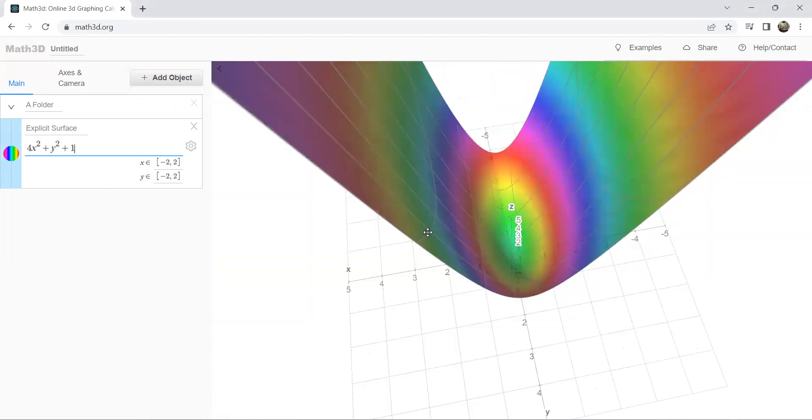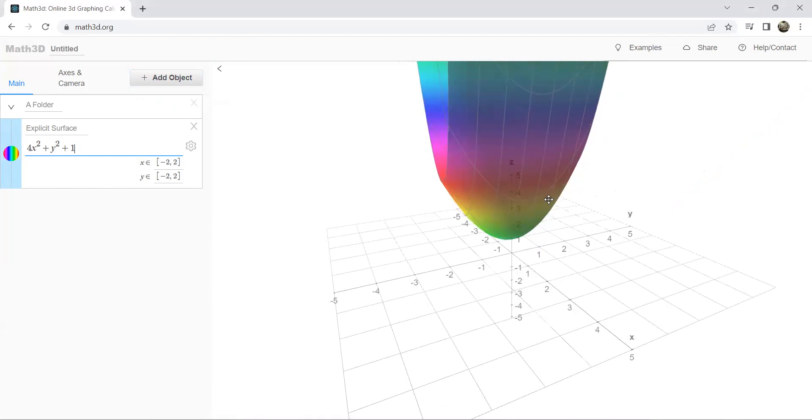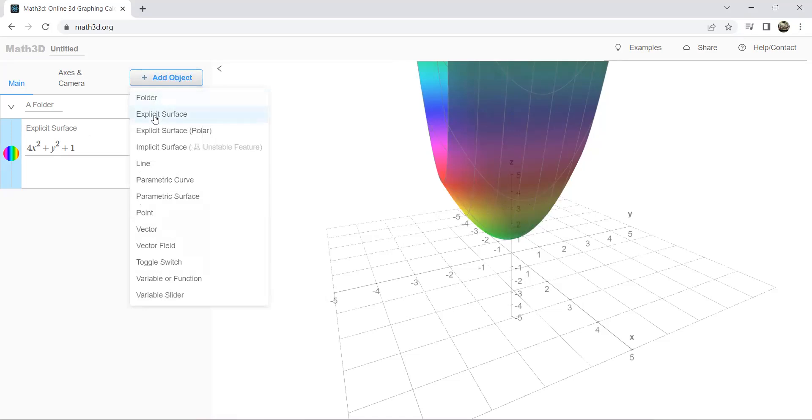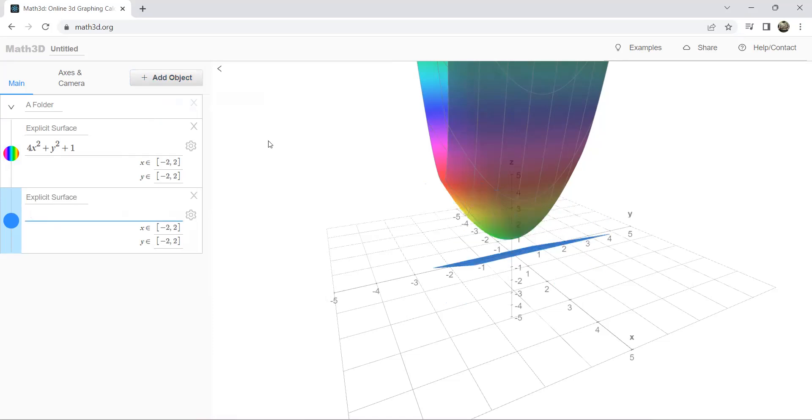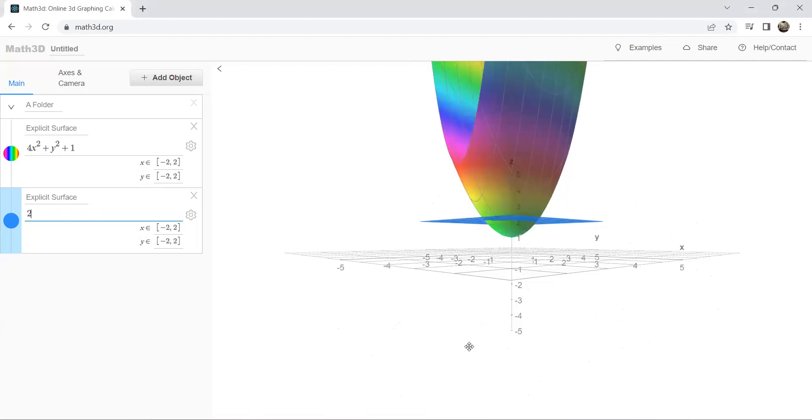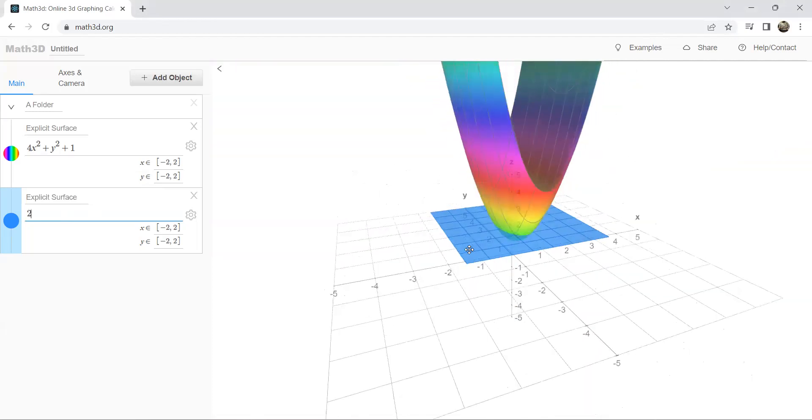So we're slicing this surface with z equals to k. Let us add another object. Suppose k is equal to 2. And here you slice your surface with this plane. You can add more.